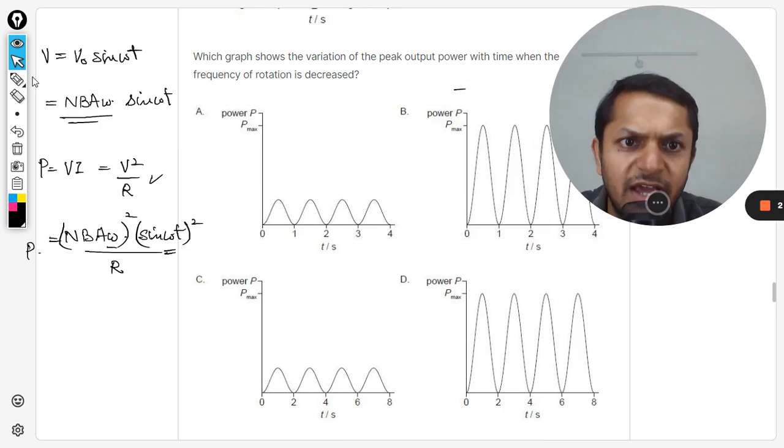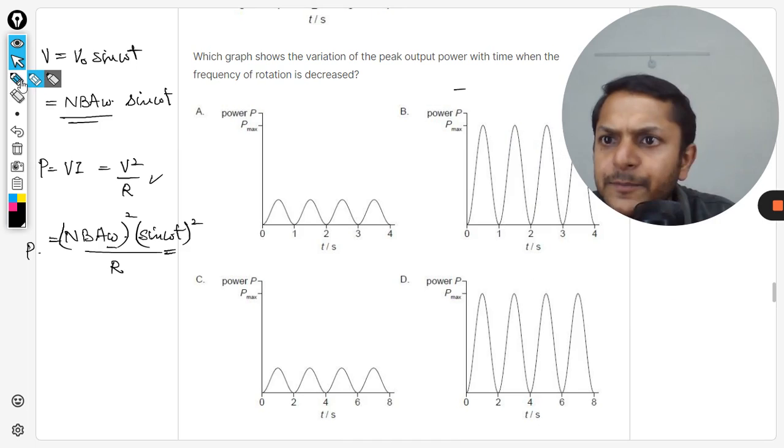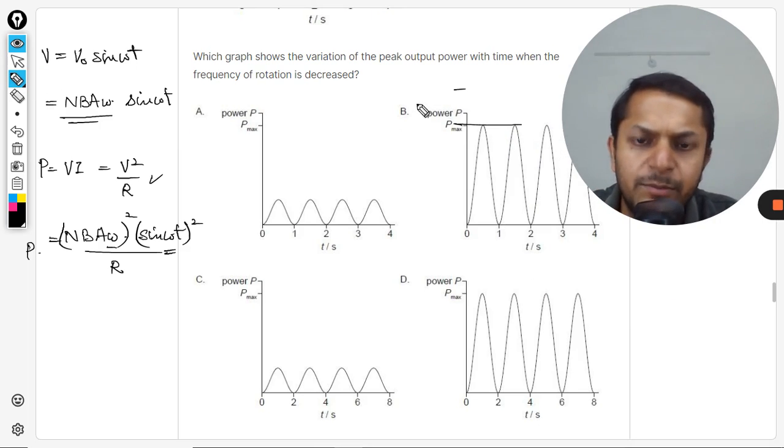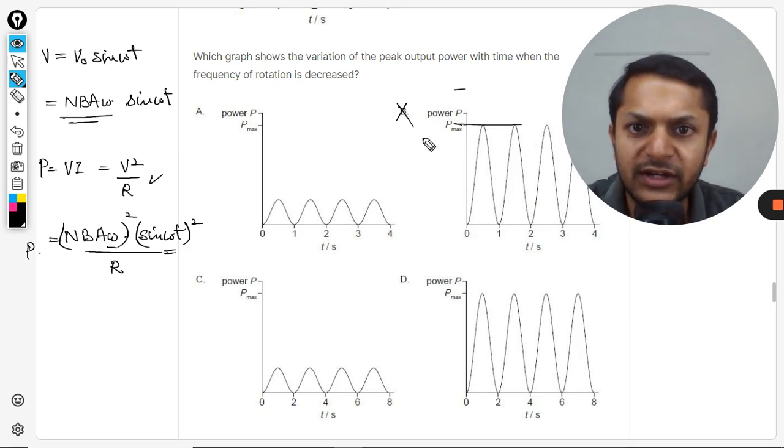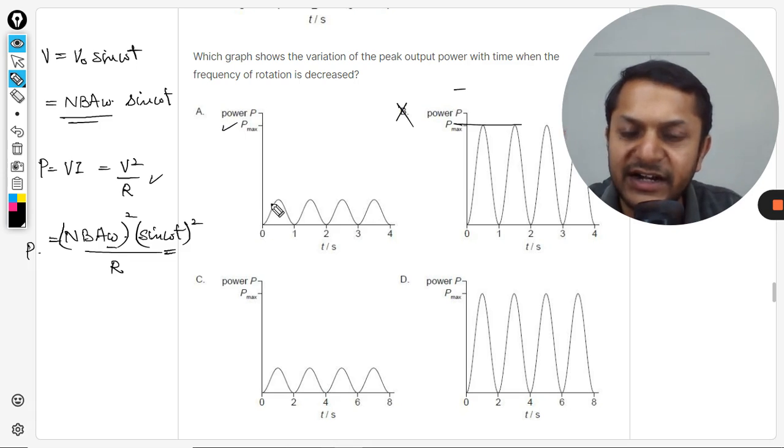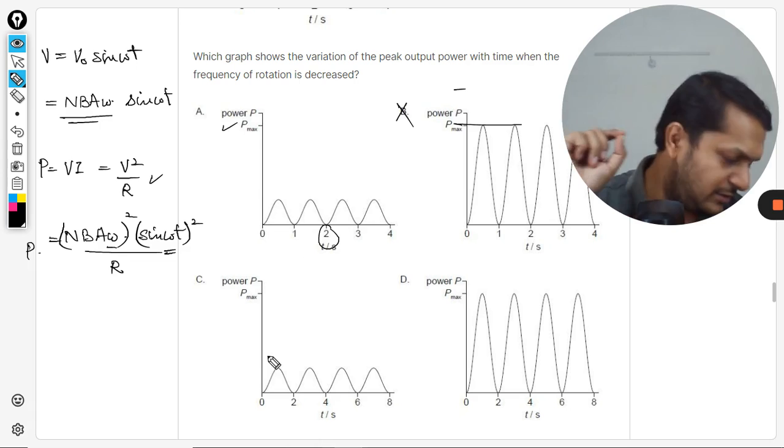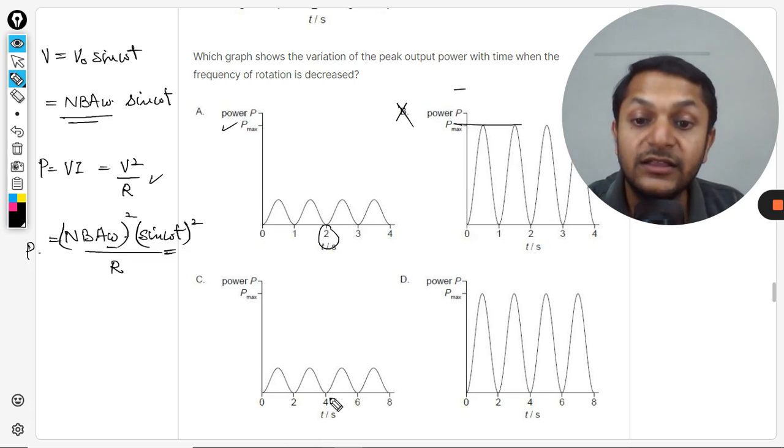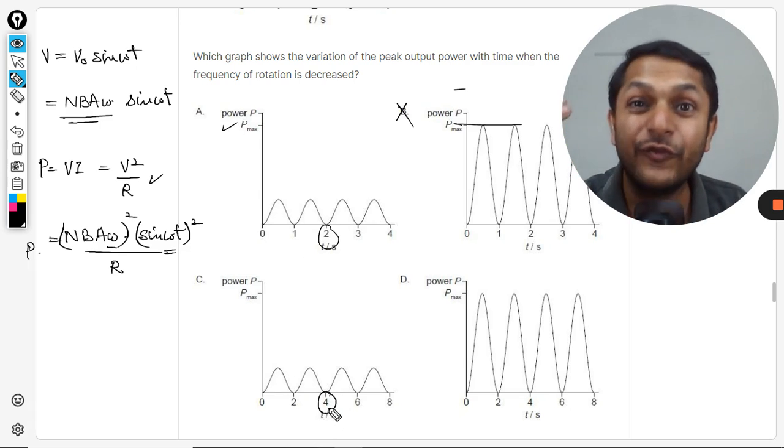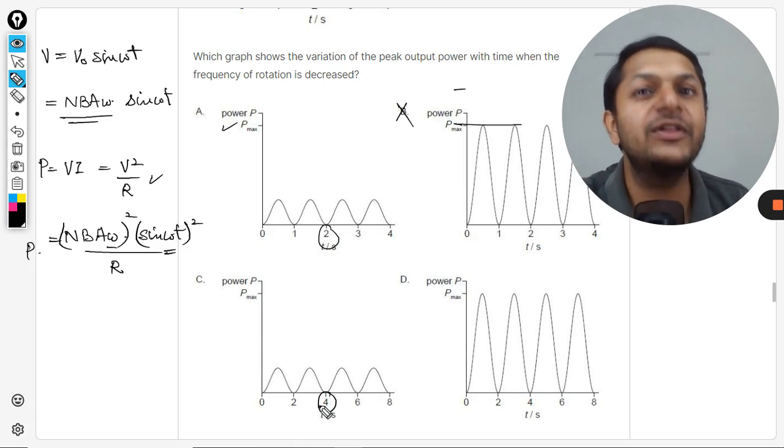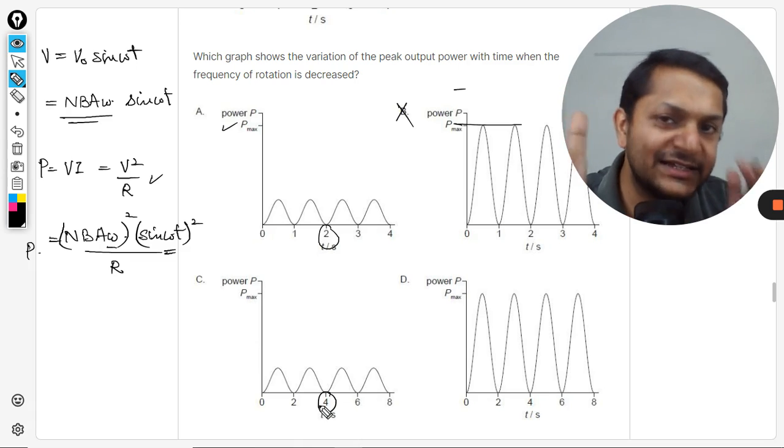So these are the options that we have. In B, the amplitude is not reducing. Here the amplitude is reducing, but the time period is still t. In this, the amplitude is lesser and the time period has increased to four, so this is one of the possible things.